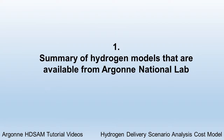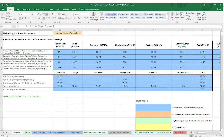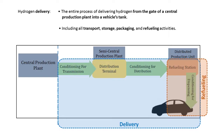The hydrogen models allow users to compare costs of hydrogen refueling options and identify major cost drivers of hydrogen refueling technologies. Their life-cycle system boundary encompasses all processes involved in delivering hydrogen from the gate of a central production plant to a vehicle.